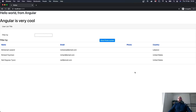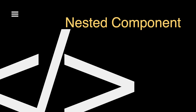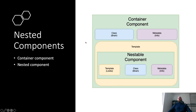The next step is to discuss nested components. To have a nested component, we need something called a container component. The idea behind nested components is to create reusable pieces of code we can use across the application — for example, a star rating component, phone number formatter, or messaging service — instead of rewriting code in every component. We create a nested component and call it anywhere we want within our application.